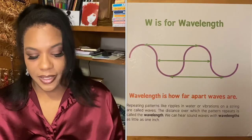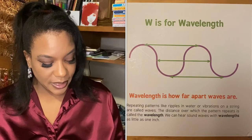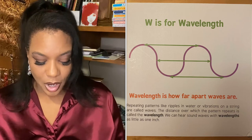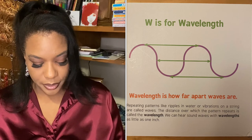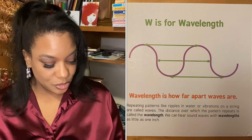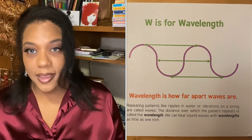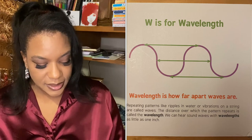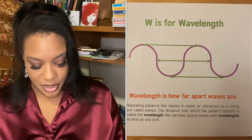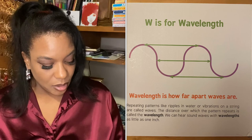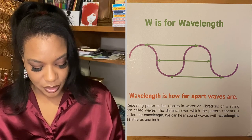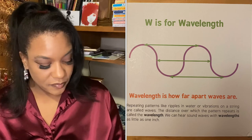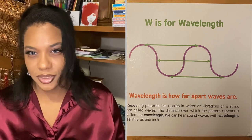W is for wavelength. Wavelength is how far apart waves are. Repeating patterns like ripples in water or vibrations on a string are called waves. The distance over which the pattern repeats is called the wavelength. We can hear sound waves with wavelengths as little as one inch.